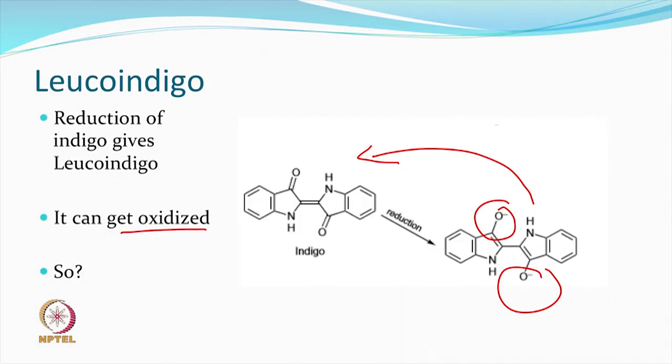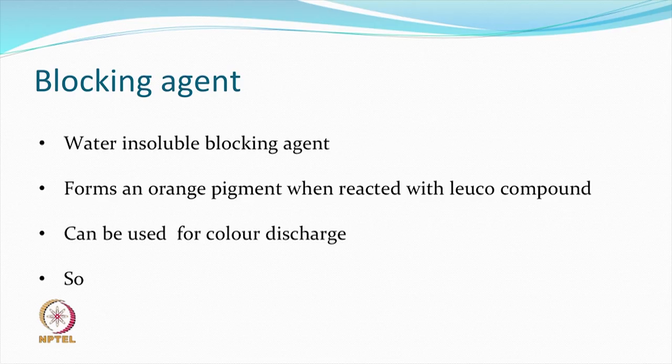One important thing to realize is whether the compound you are getting has a colour or not. You must remember that the indigo dye, when reduced, becomes a very pale colour. But some anthraquinonoid dyes will also be deeply coloured when reduced — they may not be that pale. If the dye still has colour under reduction, you would be more interested in removing the dye entirely. This particular blocking agent is a water-insoluble compound, and by itself it makes some kind of an orange pigment when it reacts with the leuco dye.